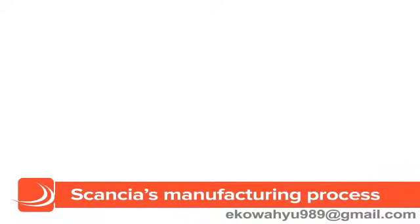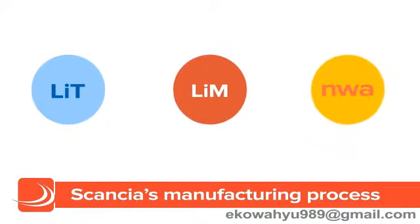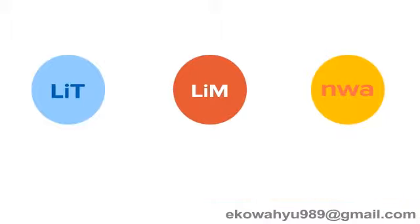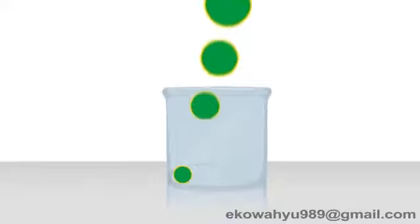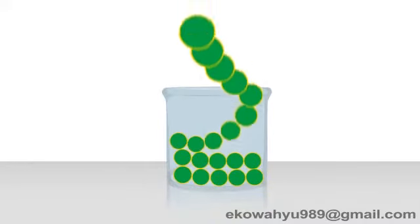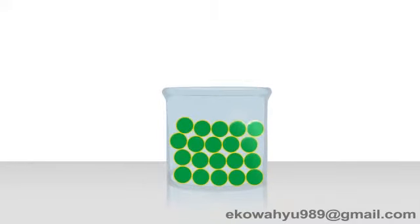Scancia fluxes are made of homogeneous pre-fused microbeads. To make them, we use the purest chemicals, merge the components, and fuse them together to form a very stable product. Once fused, all these components form a very homogeneous product made of spherical microbeads.